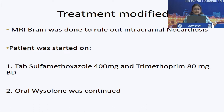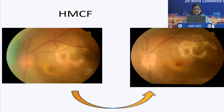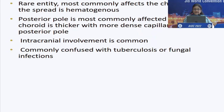After the culture report, MRI of the brain was done to rule out intracranial nocardiosis. The patient was started on sulfamethoxazole and trimethoprim combination along with oral steroids and showed a very nice improvement. Vision improved to 6/18 and N12 with complete regression of subretinal fluid and the yellowish lesion.